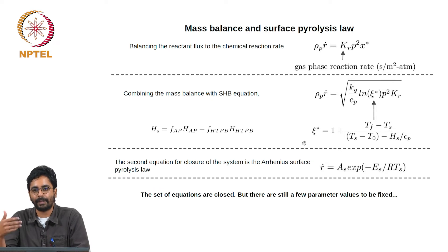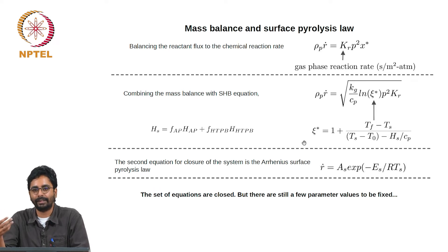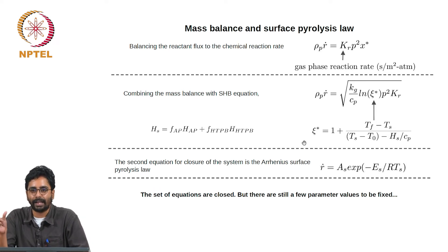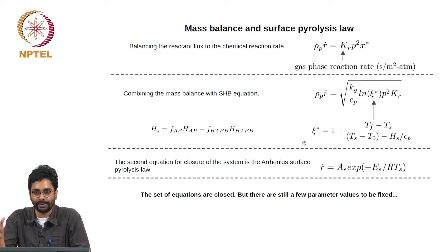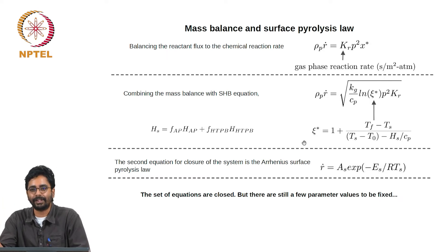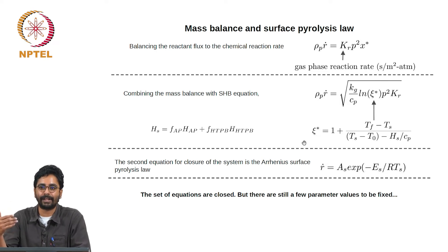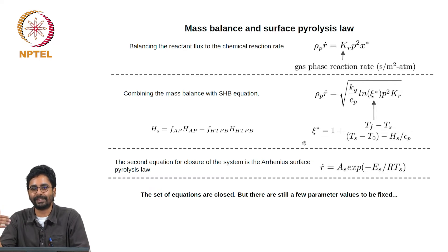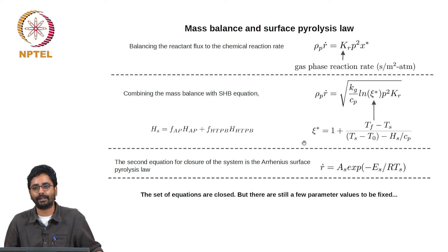Calculations were run for AP deflagration for various values of E_s/R. It was found that only for a range of E_s/R values between 6000 and 7000 Kelvins did the calculations show that AP can undergo steady deflagration — for every other condition the deflagration was unsteady. But experimental observation shows AP deflagration is always steady. This approach is called fixing E_s/R based on intrinsic stability.